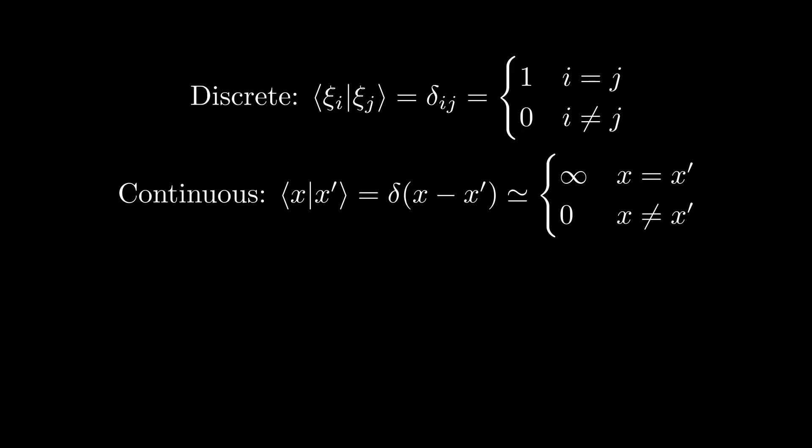The Dirac delta is not a function, but rather a type of distribution or generalized function, which can be thought of as being effectively 0 everywhere where the argument is non-0 and then plus infinity when the argument is 0. This function is normalized such that its integral from negative infinity to positive infinity is 1. The Dirac delta is really only well-defined when we integrate it against something, in which case we have the following relation. I would highly recommend you keep this property in mind since it tends to show up in a lot of different fields.